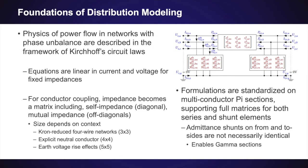Under the hood in Power Models Distribution, we try to take a generic approach to modeling to avoid edge cases. For example, in the case of branches, the physics of power flow under phase unbalance are described in the framework of Kirchhoff's circuit laws, where equations are linear in current and voltage for fixed impedances. For the coupling of neighboring conductors, the impedance becomes a matrix that includes self-impedance on the diagonals and mutual impedance on the off-diagonals, where the size of the matrix depends on the context. For example, a Kron-reduced 4-wire network would be 3x3, networks with explicit neutral conductors 4x4, and we can even see 5x5 matrices where earth voltage rises are included.